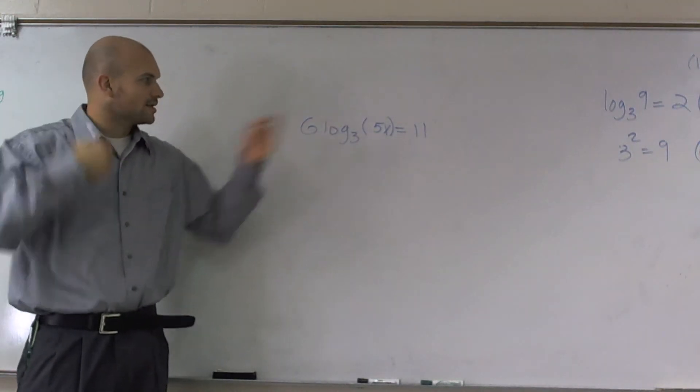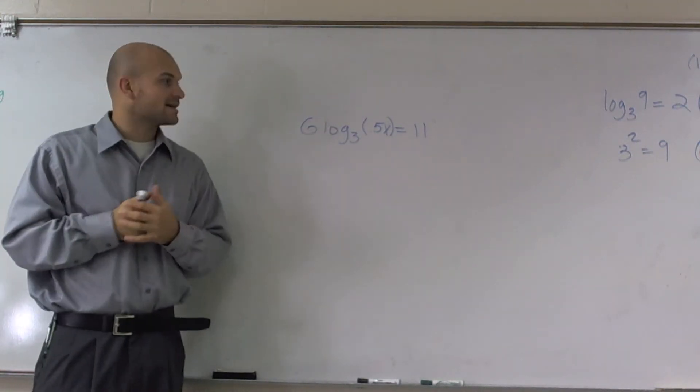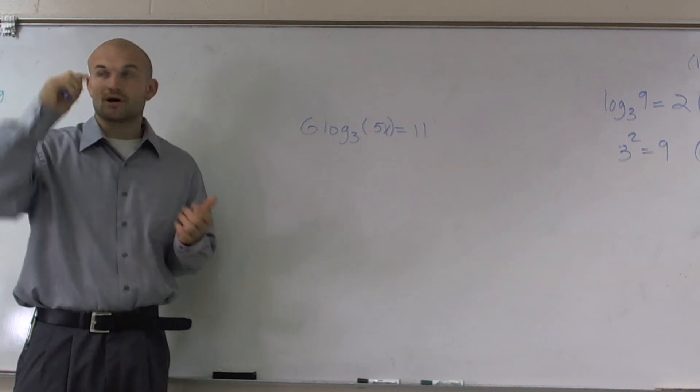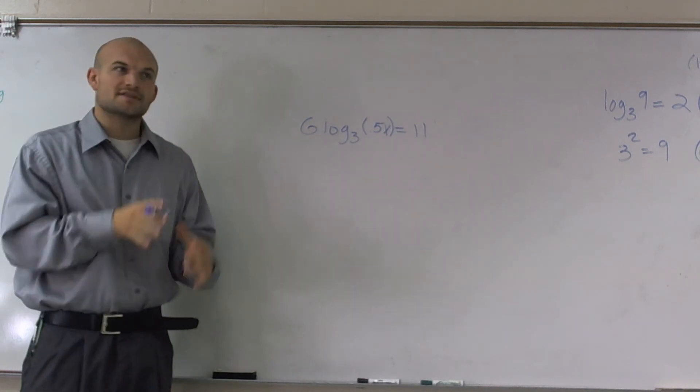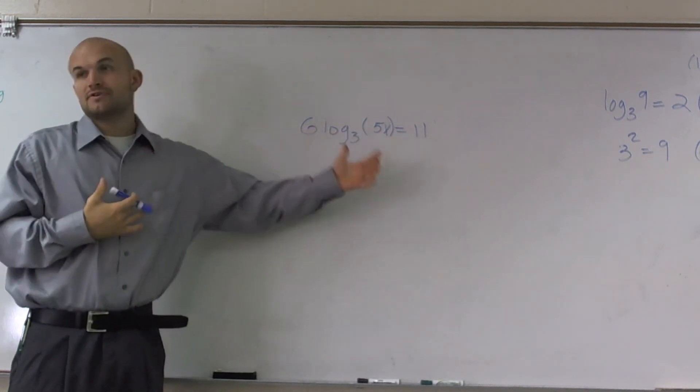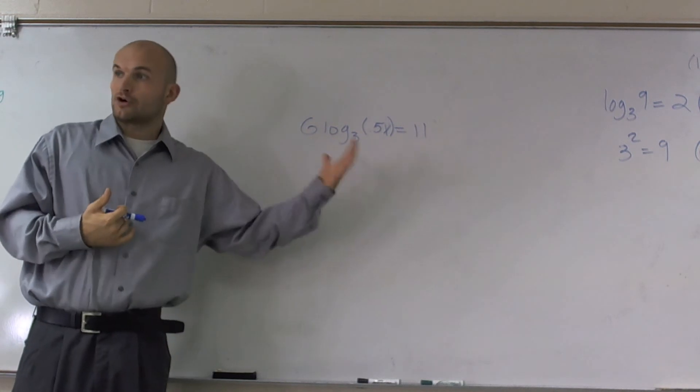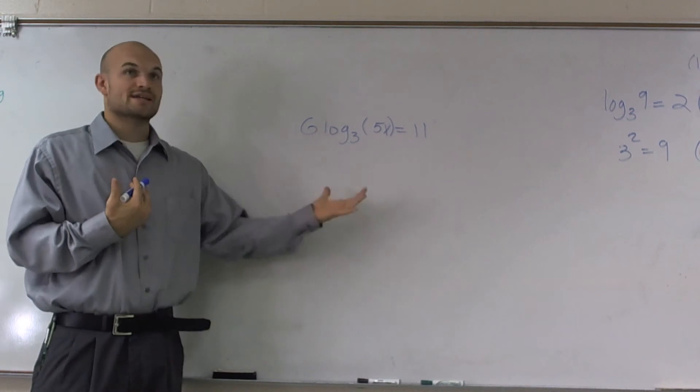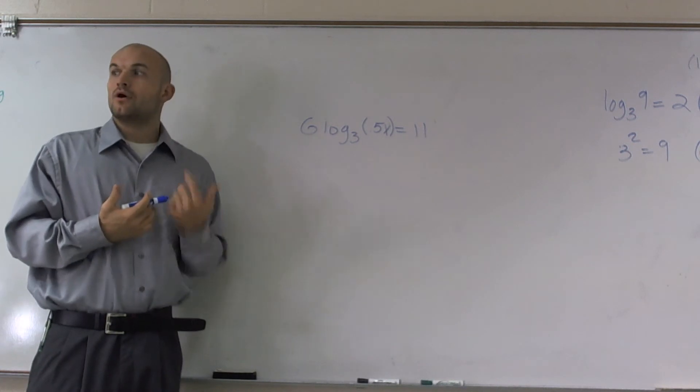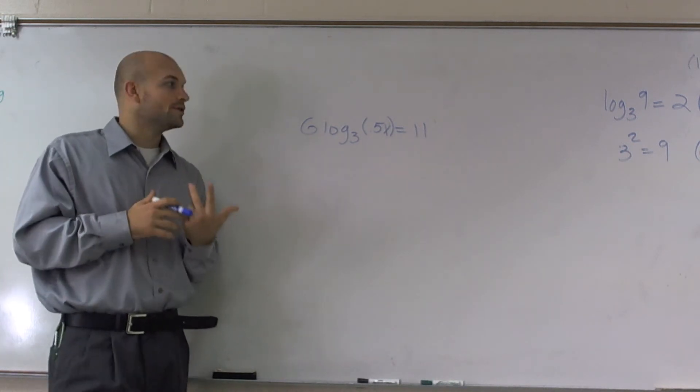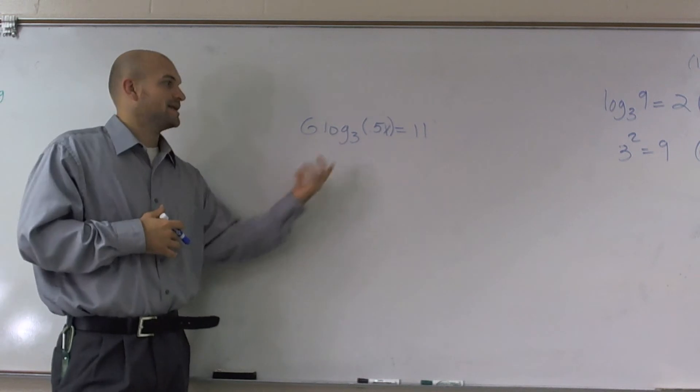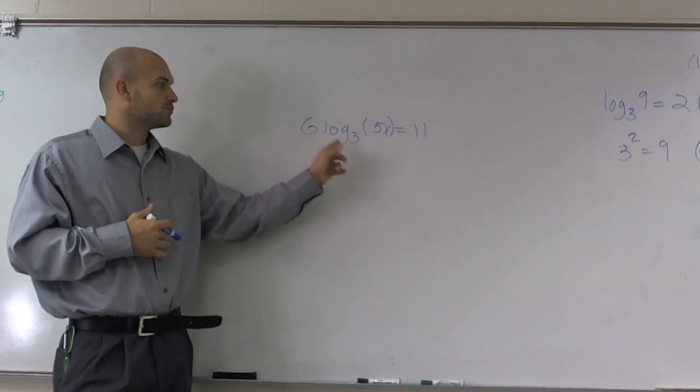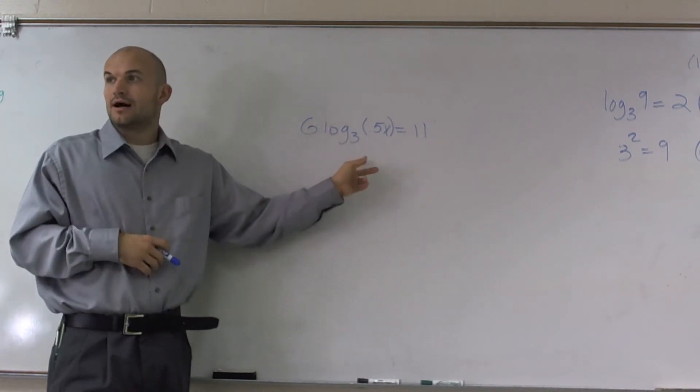So what this states is 6 log base 3 of 0.5x equals 11. I'll try to make this like, here's kind of some steps you want to write down. Whenever you see a log and I'm saying solve for a logarithmic equation, there's two things you can look for. One is transfer it to exponential form, or the other one is use your one-to-one properties and exponentiate each side by raising it to whatever your base is of your logarithm.